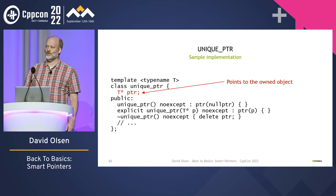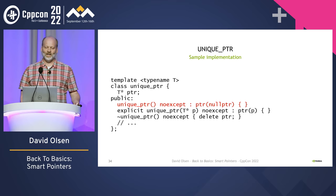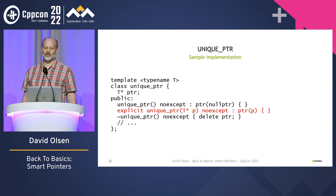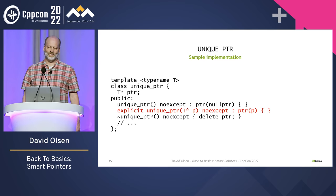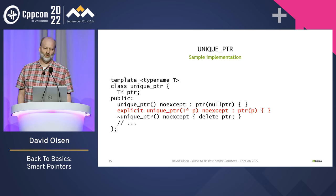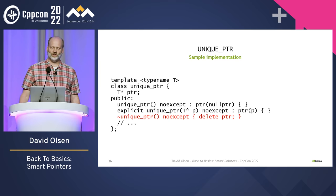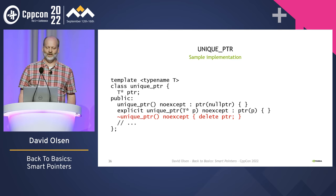The default constructor creates a unique_ptr that doesn't own anything — this is referred to as an empty unique_ptr, though it may colloquially be called a null unique_ptr. There is an explicit constructor that takes a raw pointer. If the pointer is not null, the unique_ptr takes ownership of the memory pointed to by that pointer. The constructor is explicit because taking ownership is a significant event that should be done intentionally, not accidentally — it would be really bad if there were an implicit conversion from a raw pointer to a unique_ptr. The destructor deletes the pointer, calling the object's destructor and freeing the memory. Deleting a null pointer is a no-op, so there is no need to check whether the pointer is empty. This is the most important part of unique_ptr: it unconditionally deletes the memory in its destructor.